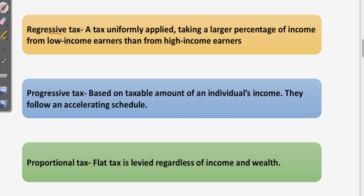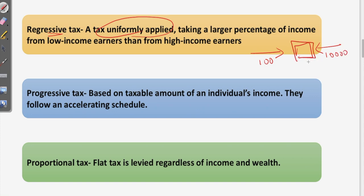Firstly, we have regressive tax. Regressive tax is uniformly applied and characterized by a less than proportional rise in the relative burden. For example, on a packet of biscuits, a low income owner earning rupees 100 and a high income owner earning rupees 10,000 both pay rupees 10 as indirect GST tax. A larger proportion of the low income owner's income goes as tax, so this tax impacts the low income owner the most.